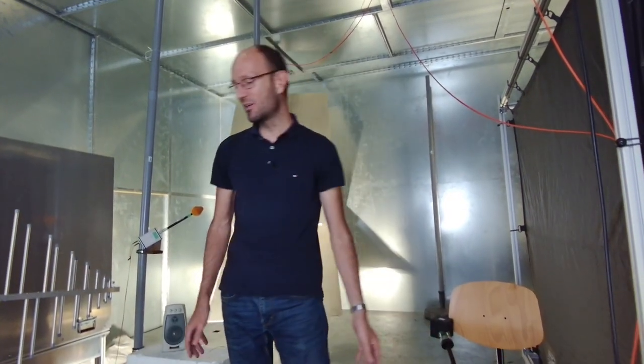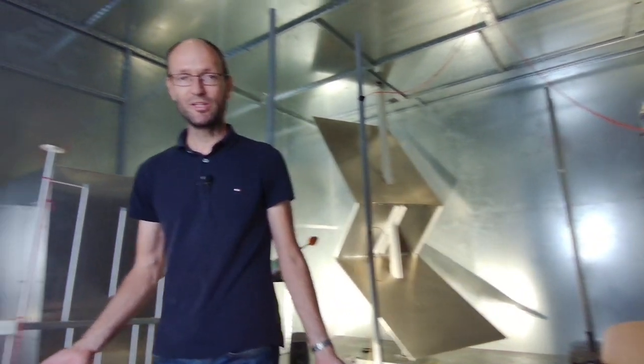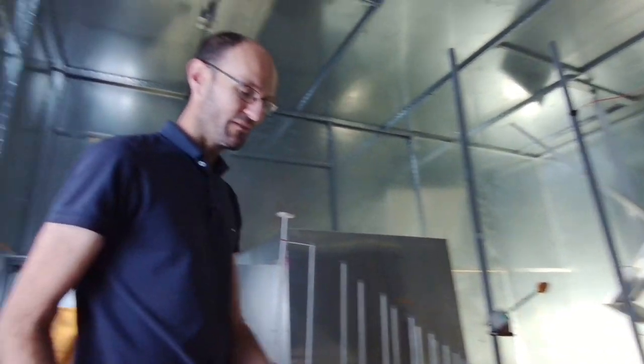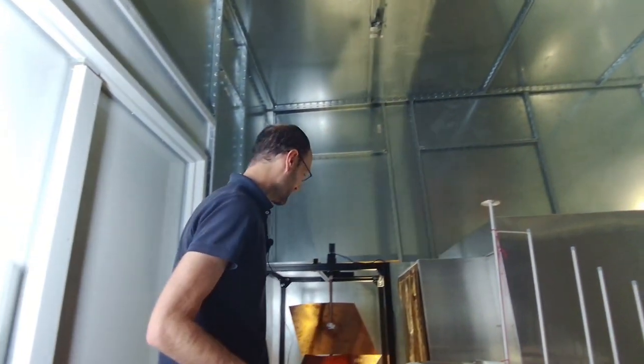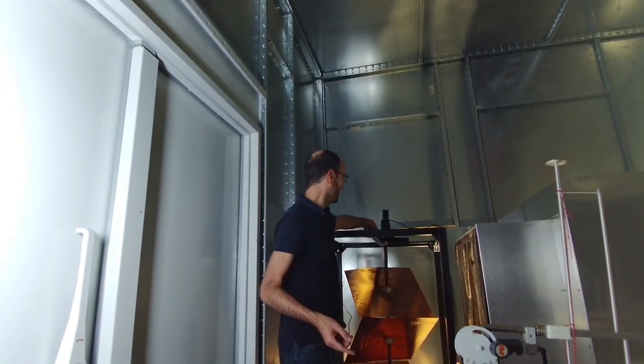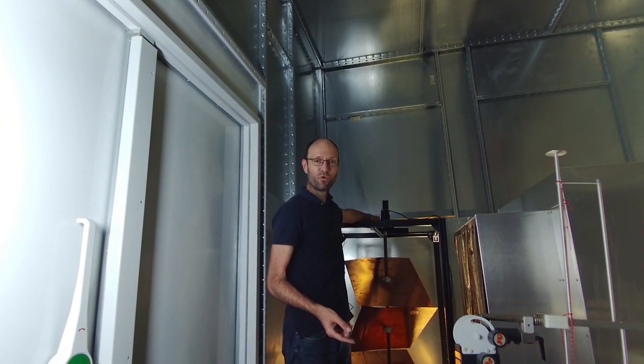And then what we have here in this chamber is also we have a smaller stirrer which is here standing in the back. This was also some student project, some portable stirrer that could also be used in other shielding cabins like an MRI cabin.